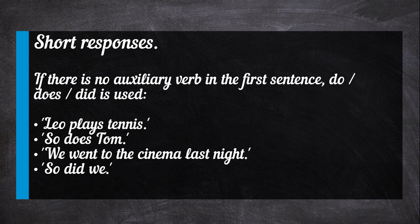If there is no auxiliary verb in the first sentence, do, does, or did is used. For example: Leah plays tennis. So does Tom. And: We went to the cinema last night. So did we.